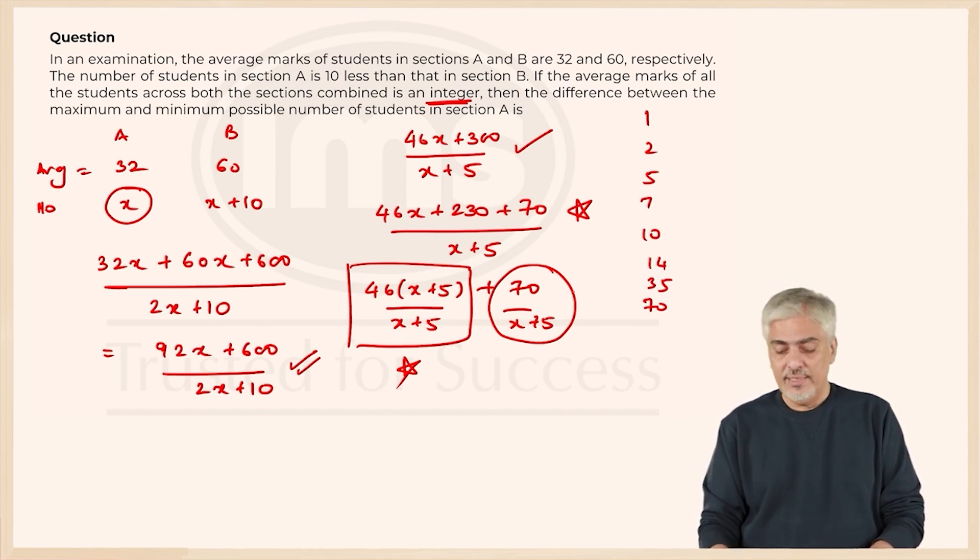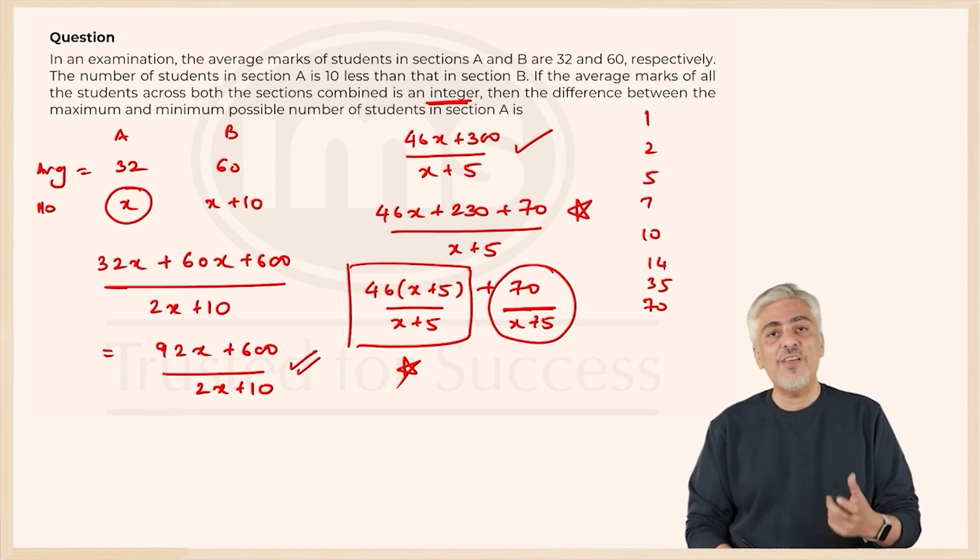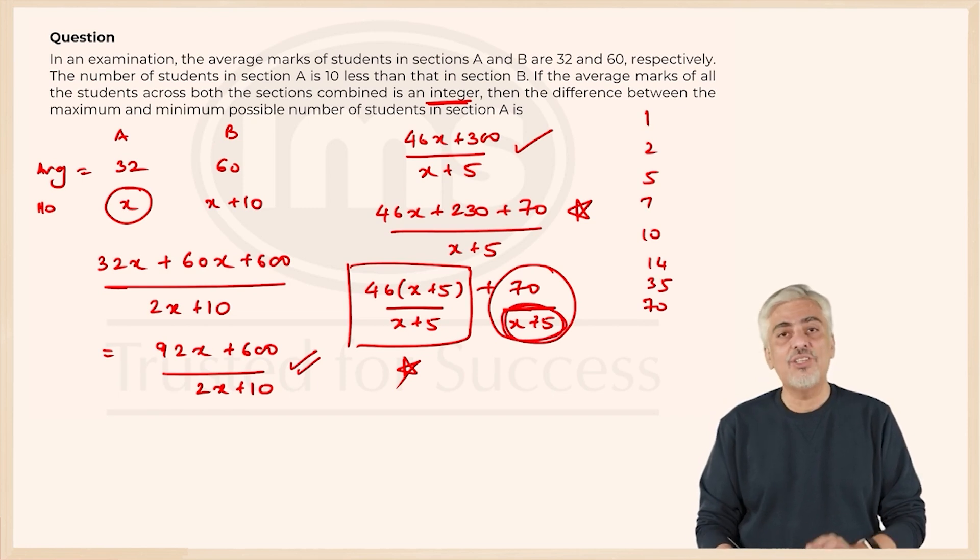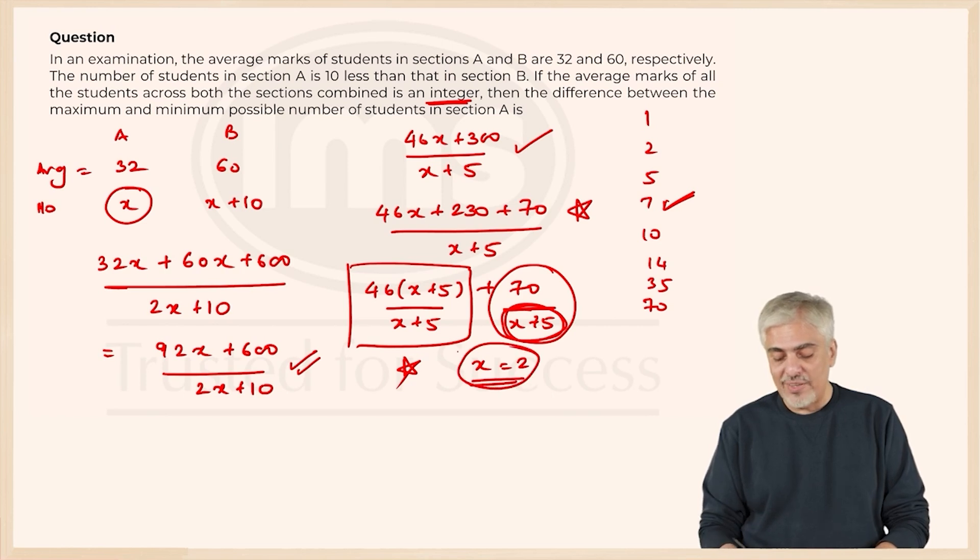70 upon x plus 5. So the smallest value of x possible when this denominator will have a factor larger than 5 but smallest such possible number - that will be 7. So my denominator can be 7, for that x can be 2. So the smallest possible value of x is 2.